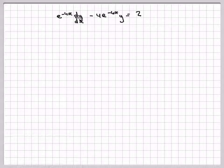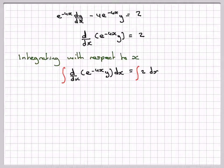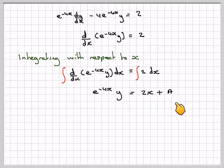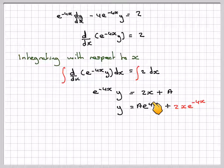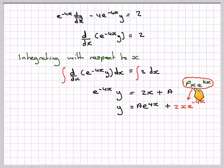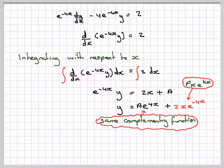This left-hand side is just an expansion of the product rule: d/dx of (e to the minus 4x times y) equals 2. Integrating with respect to x, the integral of d/dx of (e to the minus 4x times y) dx equals the integral of 2 dx, so e to the minus 4x times y equals 2x plus a. Dividing by e to the minus 4x gives y equals ae to the 4x plus 2x e to the 4x. You can see that the particular integral is of the format px e to the kx, and we have the same complementary function as before.